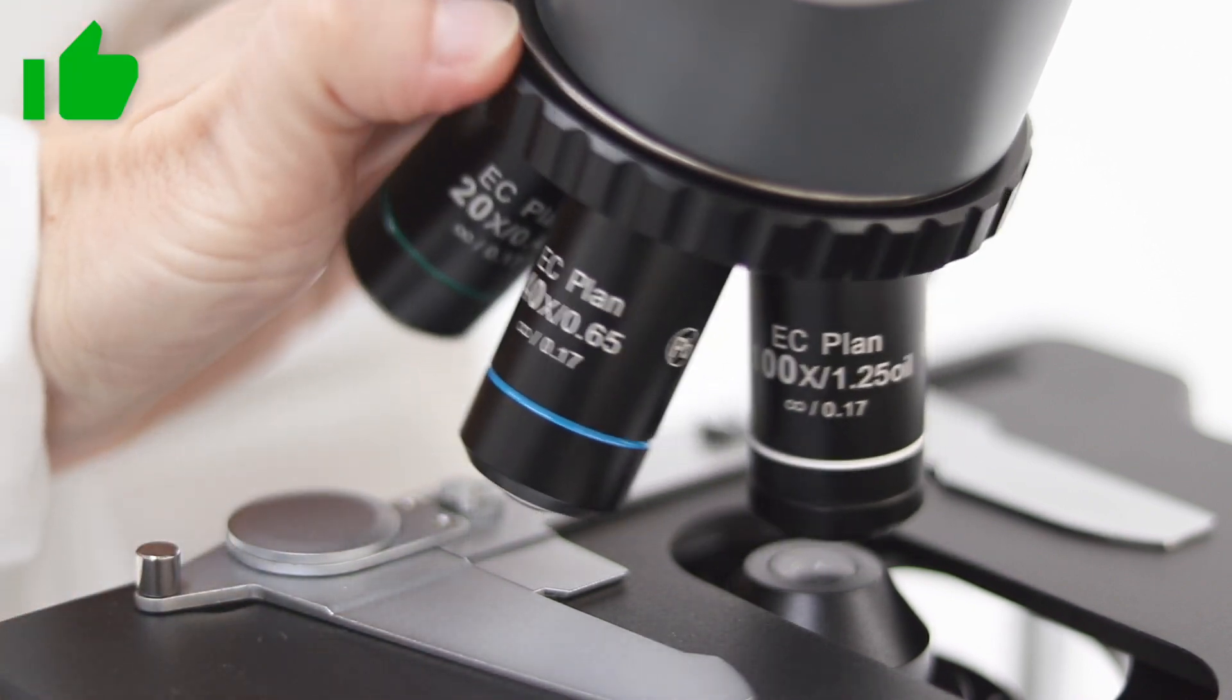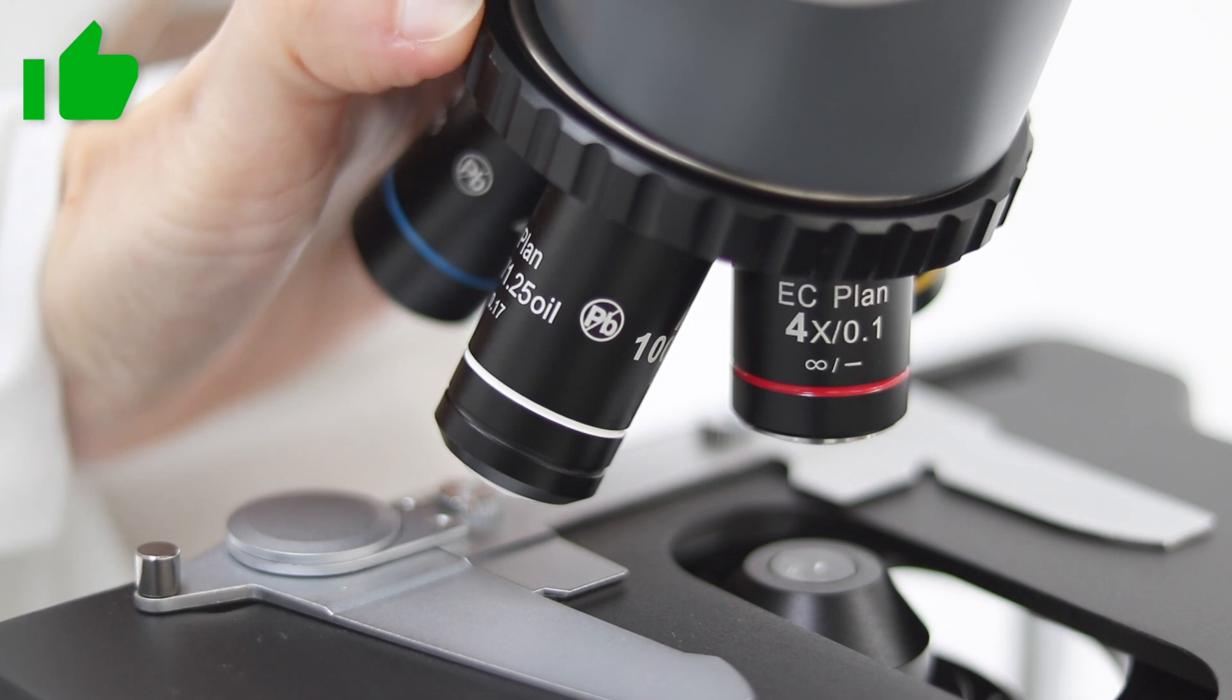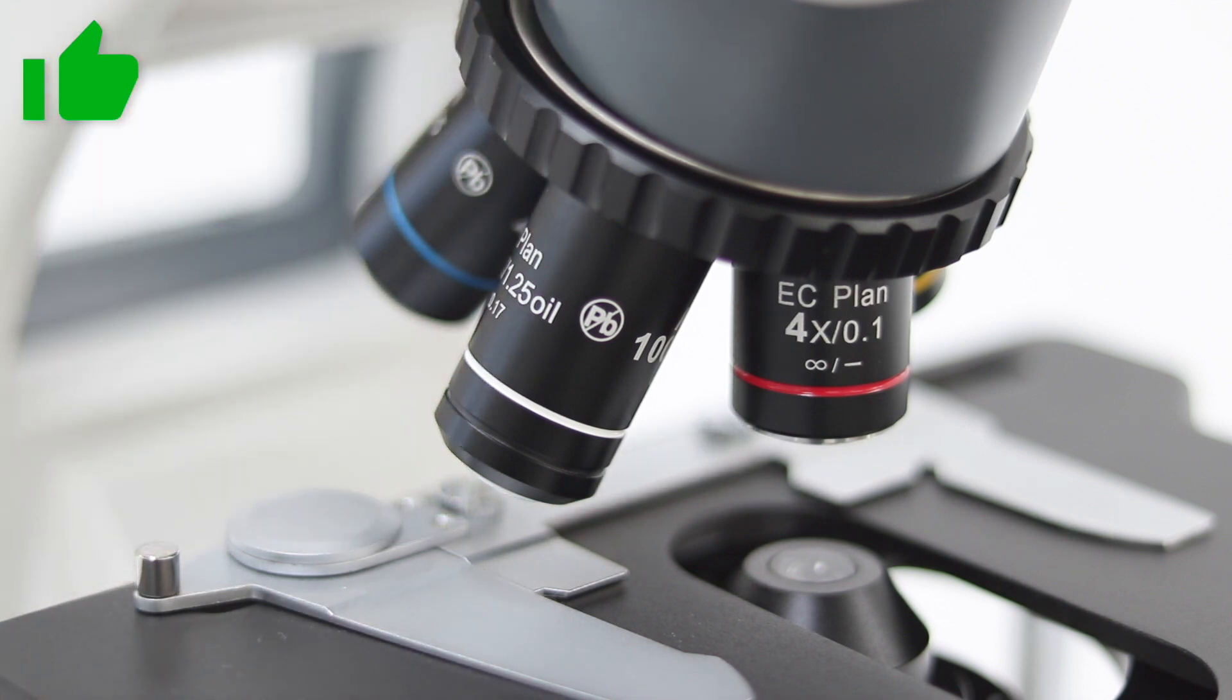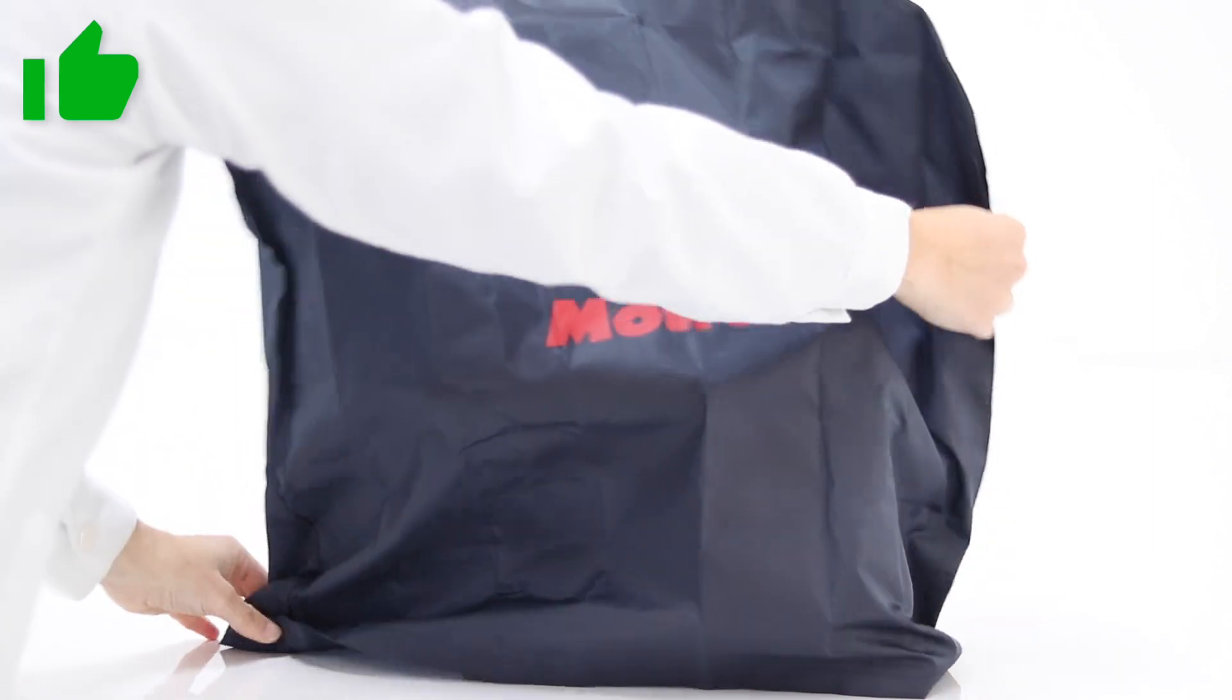Place the objective with the lower magnification, which can be easily identified as it is the shorter one, on the optical path. This will avoid any contact with the stage, condenser or slide when using it again. Cover the instrument with a vinyl dust cover.